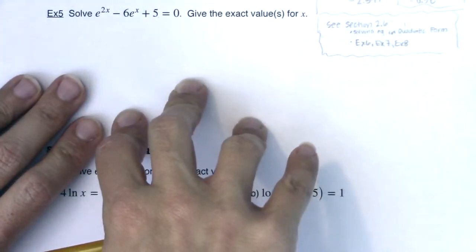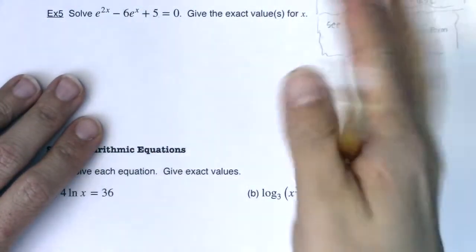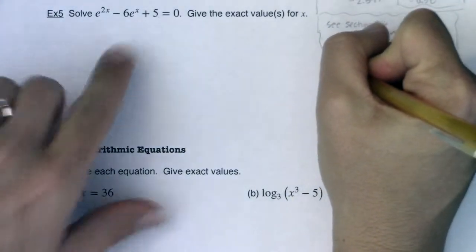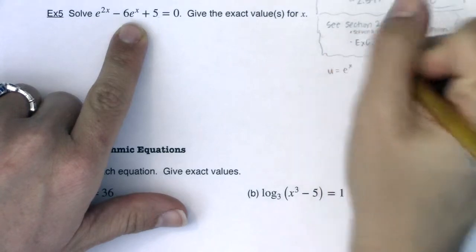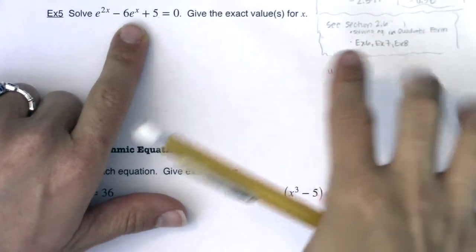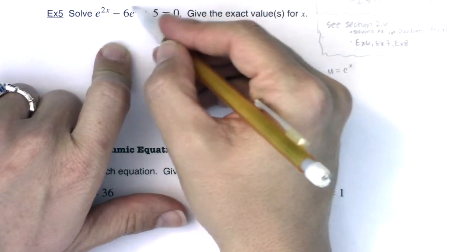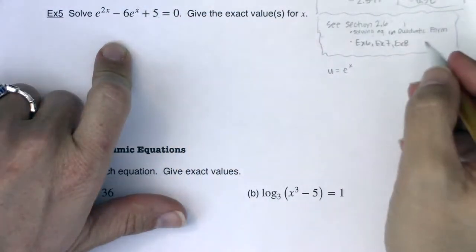So this is a u sub. If this seems familiar to you, great. And if it doesn't, no problem, we're going to work on it. So I'm going to let u be equal to e to the x. And if you look back at those examples, you see we always let u be equal to this middle term. I don't have to worry about the constant. I'm going to let it be equal to this middle term.